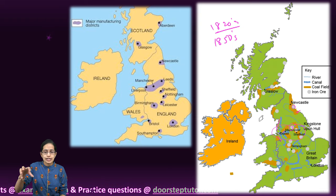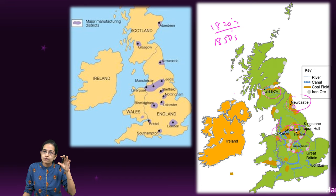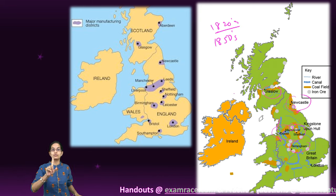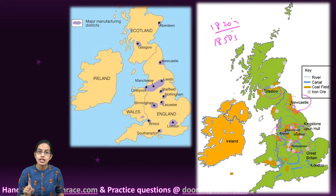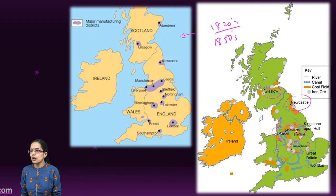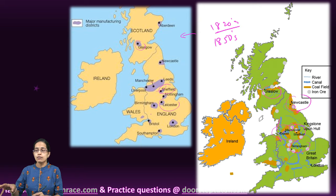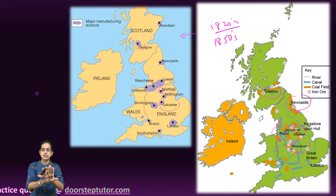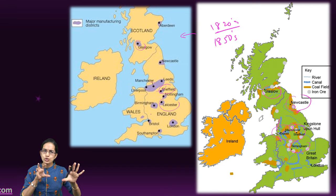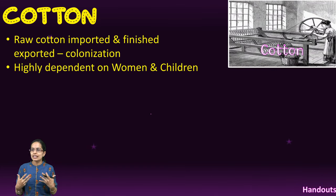Industrial locations were limited to a few major centers like Liverpool, Manchester, Newcastle, Birmingham, and Glasgow — it was not the whole of Britain participating in the Industrial Revolution. Similarly for cotton, major manufacturing centers were in Glasgow, Manchester, Sheffield, Nottingham, Leicester, and Birmingham. When both maps are overlaid, the epicenters of production were more or less the same.